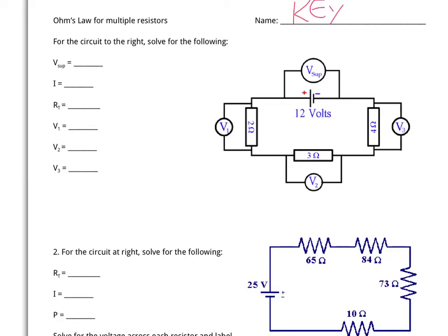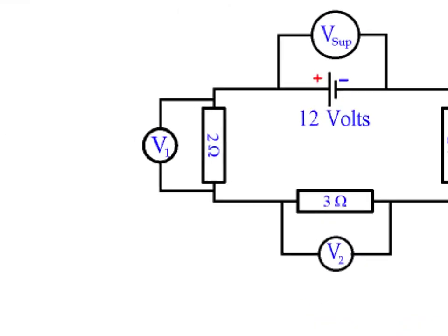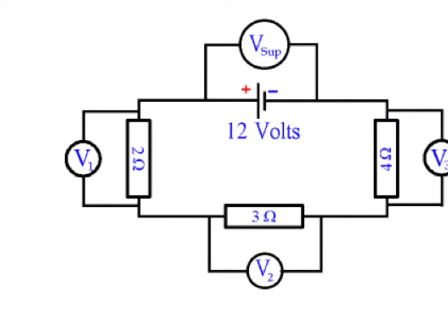The first thing we're asked to solve on question number one is for an individual voltage. Looking at the circuit up close, we are told there is a voltage of 12 volts supplied from the battery source. That current then goes through a 4 ohm, 3 ohm, and then 2 ohm resistor before returning to the energy supply. These are all wired in series — the current has to go through one, then another, then another.